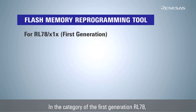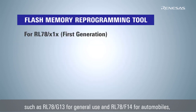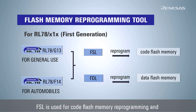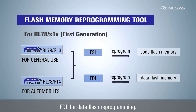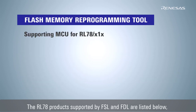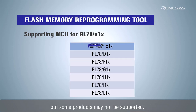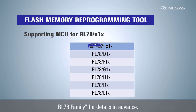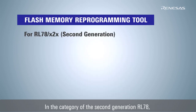In the category of the first generation RL78, such as RL78G13 for general use and RL78F14 for automobiles, FSL is used for code flash memory reprogramming and FDL for data flash reprogramming. The RL78 products supported by FSL and FDL are listed below, but some products may not be supported. Please refer to the SELF RAM list of flash self-programming library for RL78 family for details in advance.